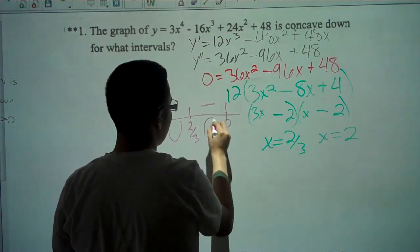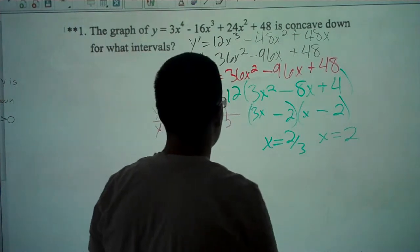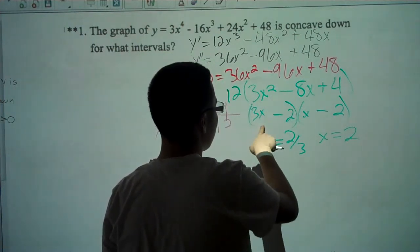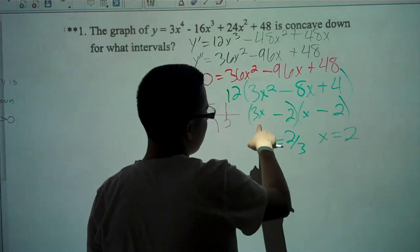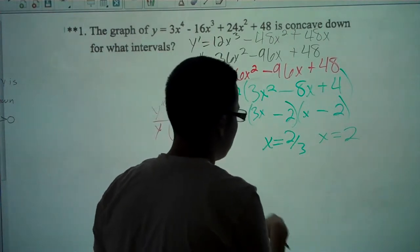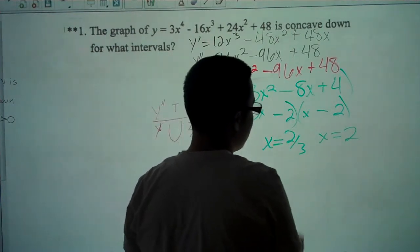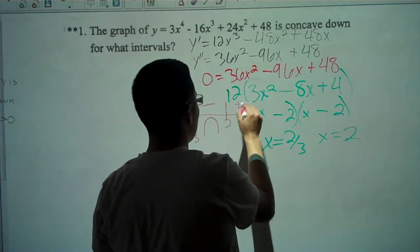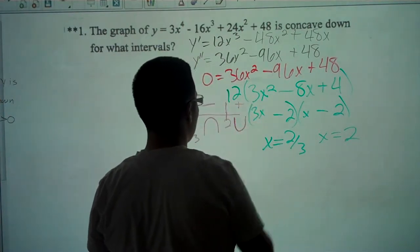Then a number greater than 2. I'll do 5. 3 times 5 equals 15 minus 2 is 13 which is positive. 5 minus 2 is 3. They're both positive so it's going to be positive, concave up.